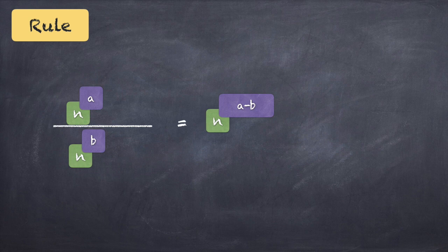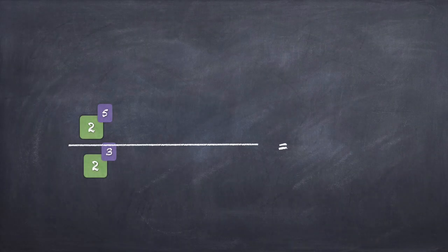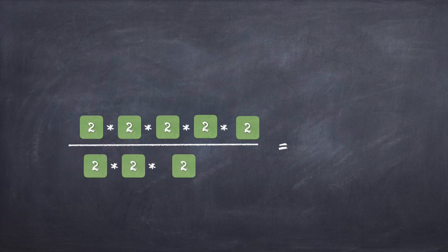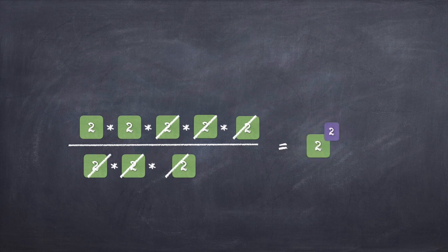Let's say we have 2 raised to 5 divided by 2 raised to 3. That means I have five 2s in the numerator and three 2s in the denominator. Since the same numbers appear in numerator and denominator, we can cancel them — three 2s on the bottom cancel three 2s on the top, leaving two 2s, or 2 raised to 2.